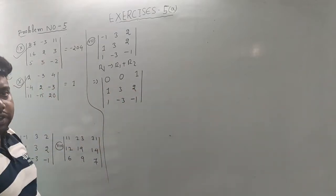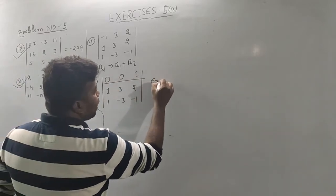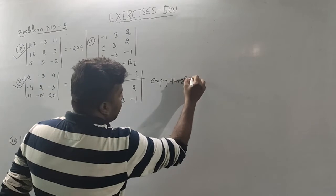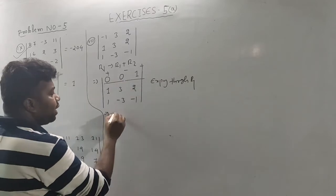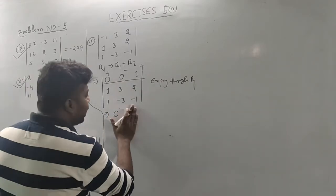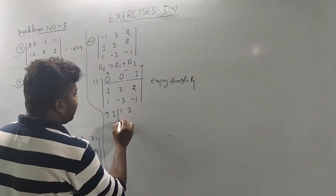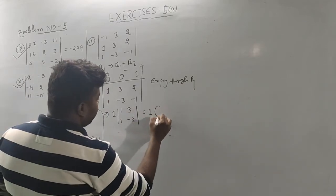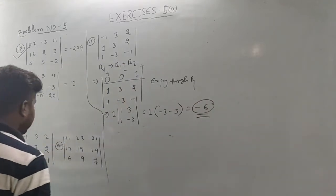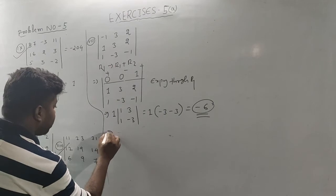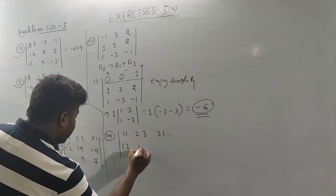So if you look at the actual data, you can see that the data — 1 plus 1 plus 1. So you can see the answer is: 1, 3, 2, 1, minus 3, minus 1. When you are asked for that answer, you can see this. How do you expand? When you are getting 0, you can see it. The answer is 0. One into minus three minus three: the final answer is minus 6.